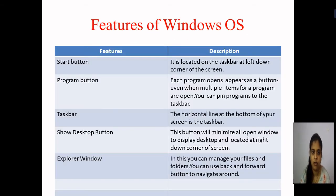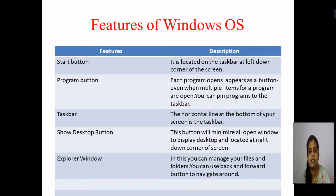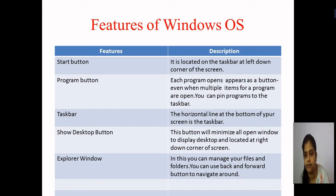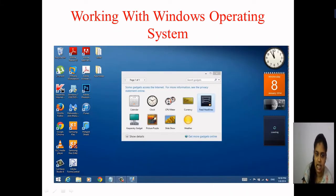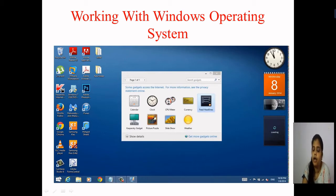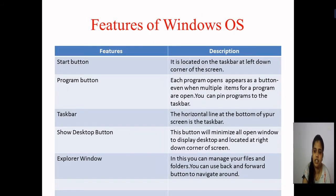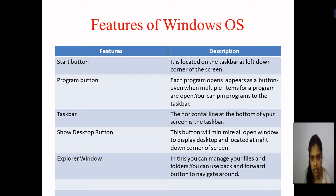Moving forward, we'll see the different features of the Windows operating system. The first feature is the Start button. The Start button is located on the taskbar at the left bottom corner of the screen. If you click on it, you can see all the different types of icons or applications present in your computer. That is the first feature — the Start button, located at the left bottom corner.